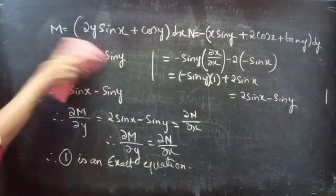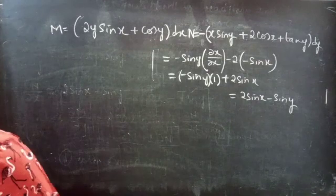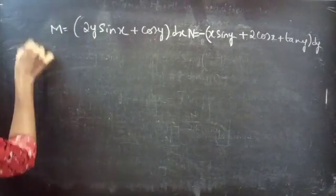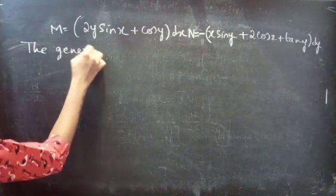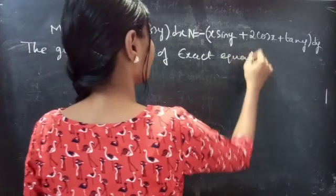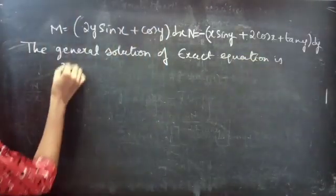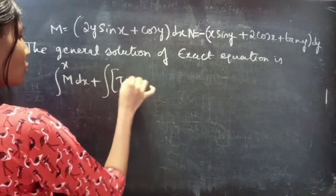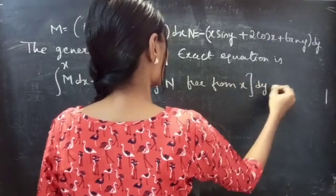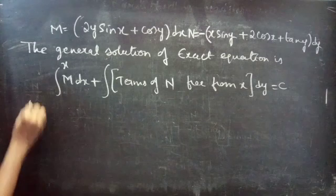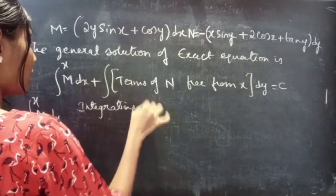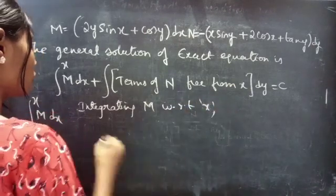Now we need to find the general solution to the given exact differential equation. The general solution of an exact equation is given by: ∫(M dx) [treating y as constant] + ∫(terms of N free from x) dy = constant.